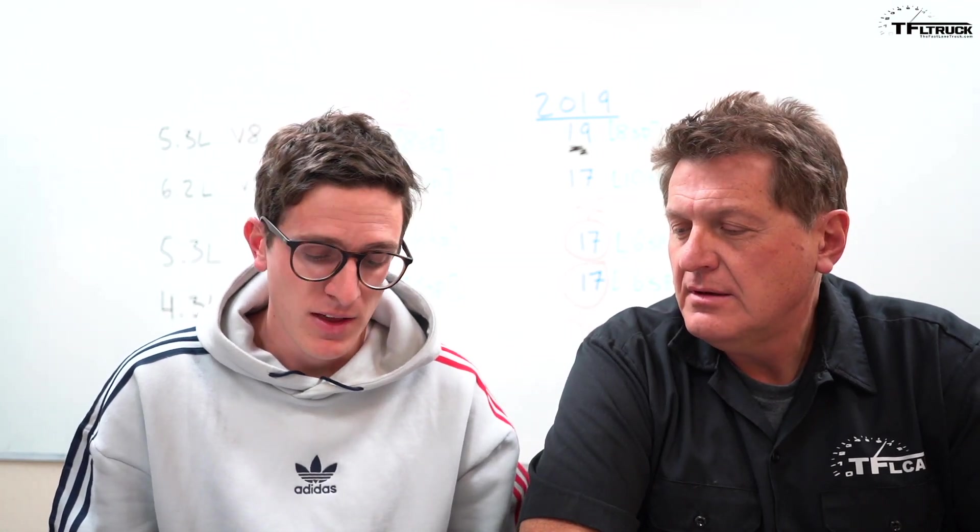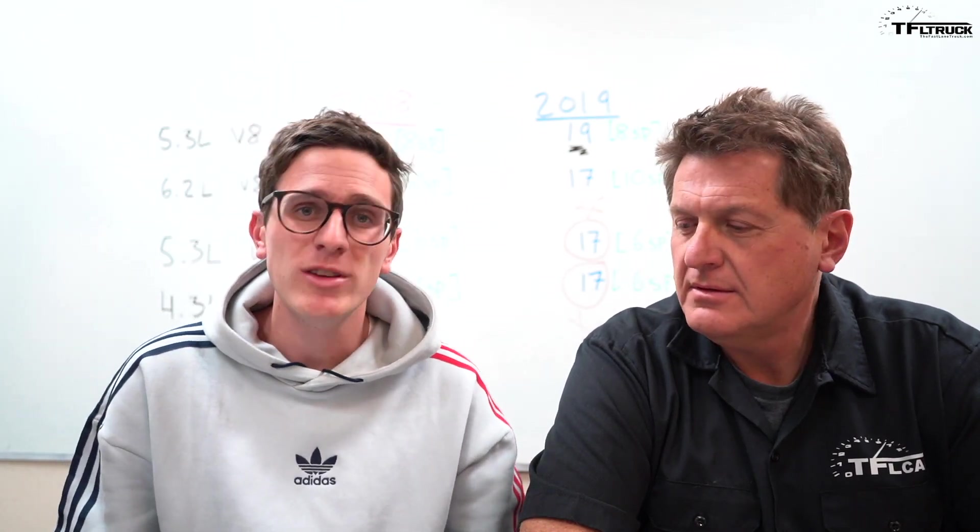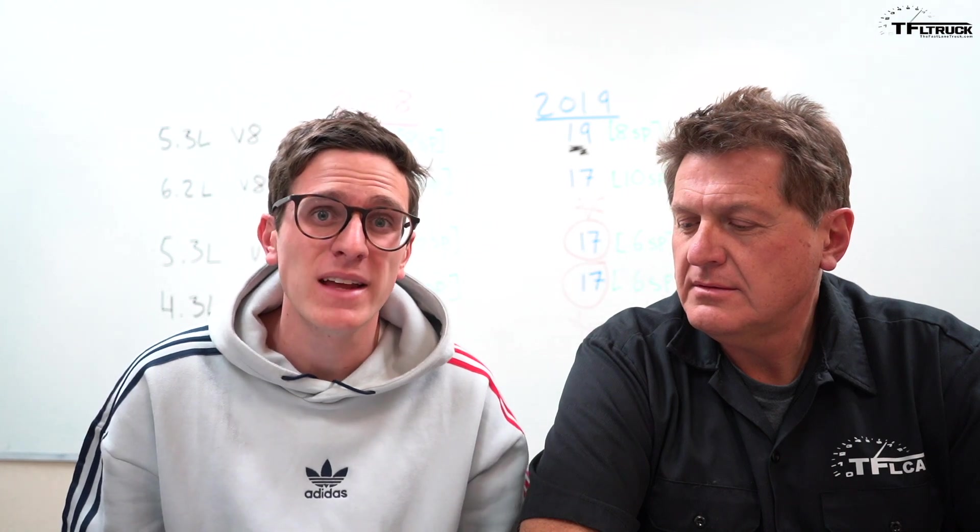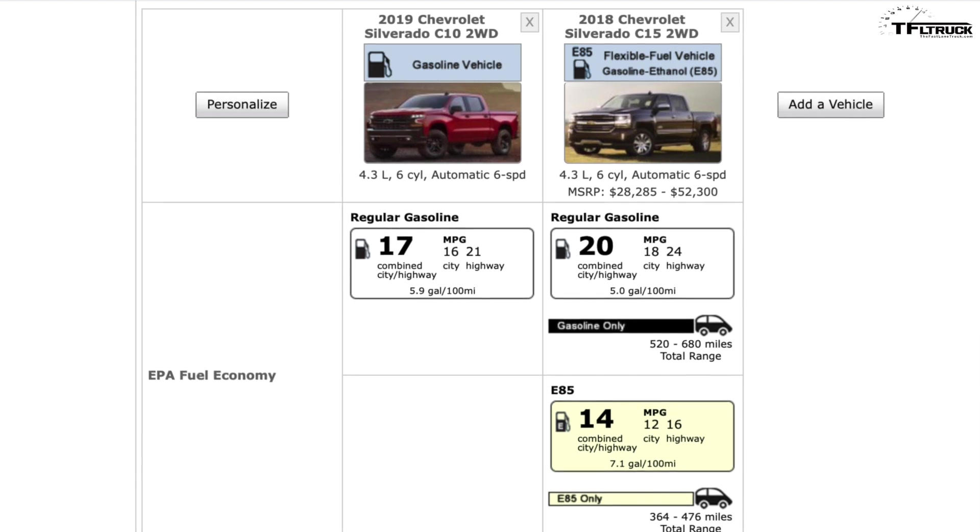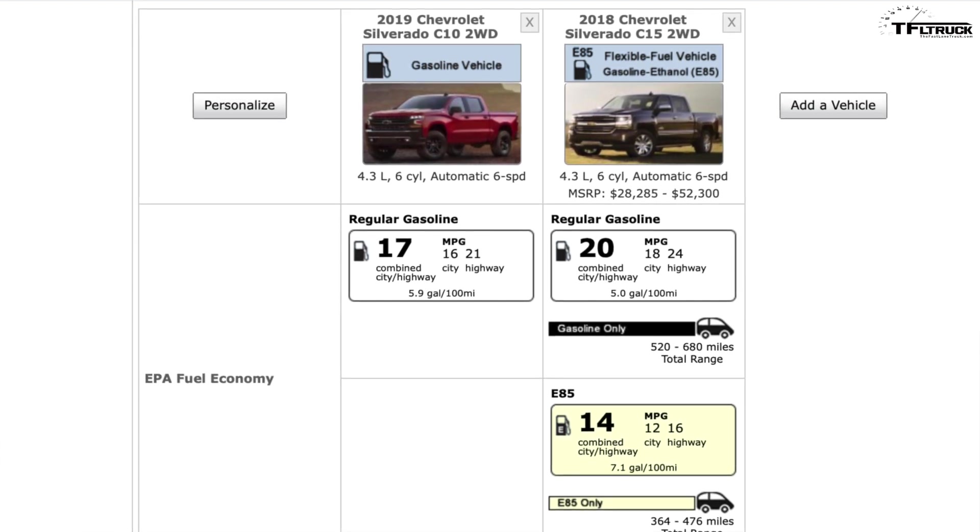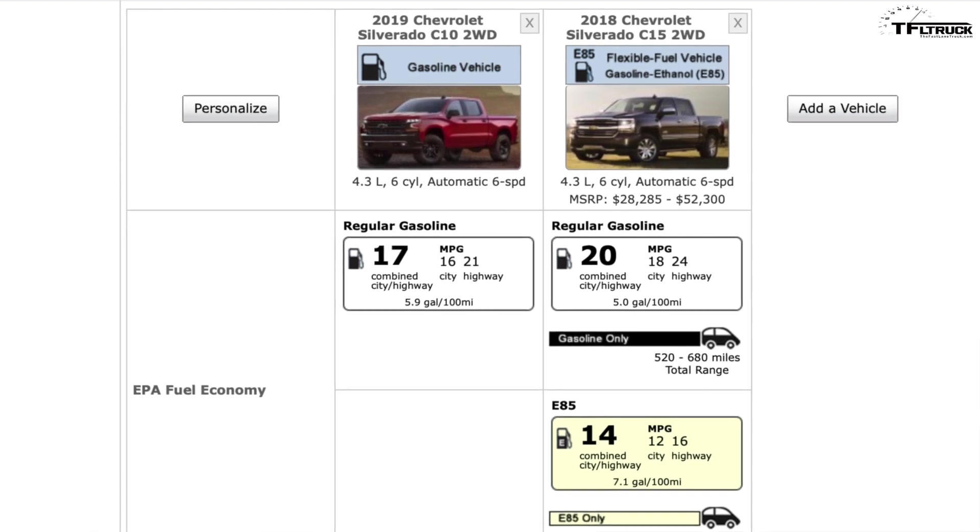Let's go to another example which is even more startling. The base engine, the 4.3 liter V6 work truck, once again comparing the same engine with pretty much the same transmission, 6-speed automatic on both the 18 and the 19. We see a 3 MPG combined discrepancy. The 18 is rated at 20 combined and the 19 with once again pretty much the same engine, pretty much the same 6-speed transmission, is only rated at 17 combined.